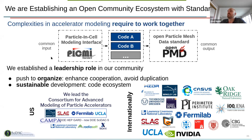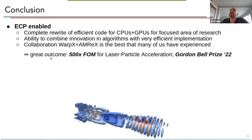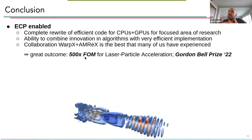In conclusion, ECP enabled us to rewrite an efficient code and abstract it to run on mobile architectures instead of holding onto the legacy approach. We had an extremely successful collaboration with AMReX. The great outcome at the end was a 500x real-time figure of merit increase — measured in updates of particles and mesh cells per second — compared to pre-ECP, and we went on to win the Gordon Bell Prize in 2022.